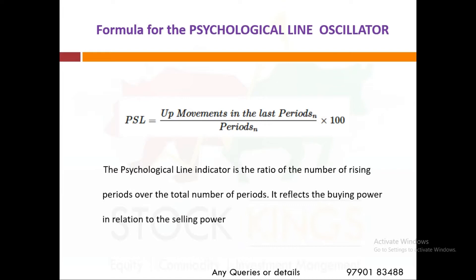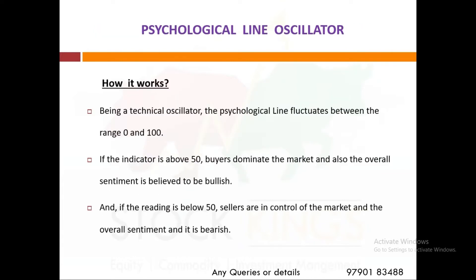The Psychological Line indicator is the ratio of the number of rising periods over the total number of periods. It mainly reflects buying power in relation to selling power and checks for changes in trend. Being a technical oscillator, it fluctuates between a range of 0 to 100.